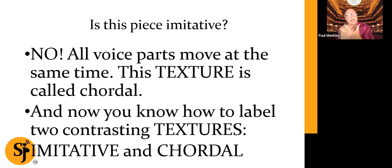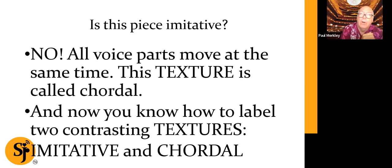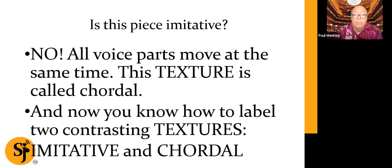So now you know two contrasting textures — imitative and chordal. You not only know what those terms mean, but you know how they feel, and you know how they make you feel. And that's the point of all of this. I hope you'll join me for our next presentation, which will be on the elements of time in music: rhythm, time, tempo, meter — so that we get that straight. Thank you very much for being here. It's a pleasure to do this with you. Hope to see you again soon. Bye.